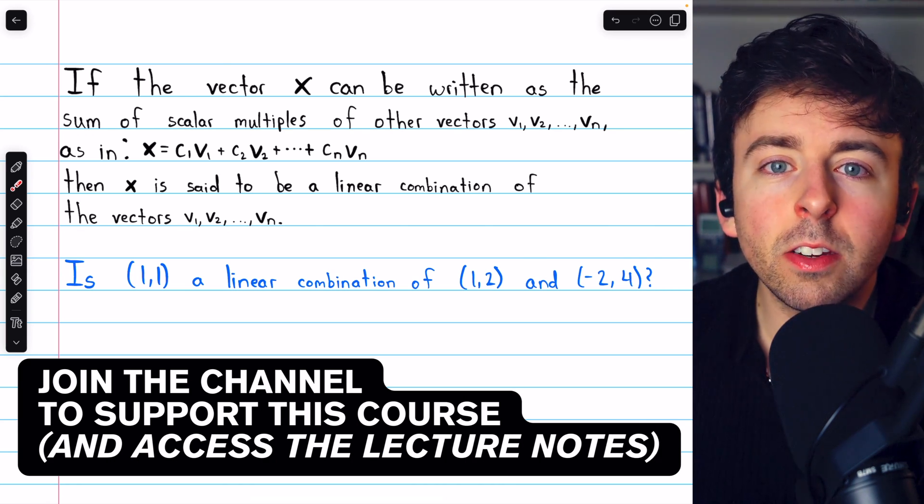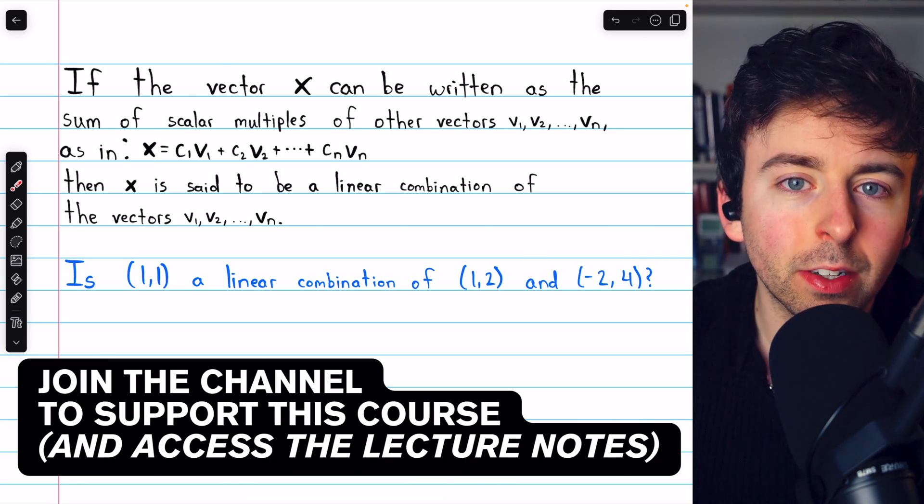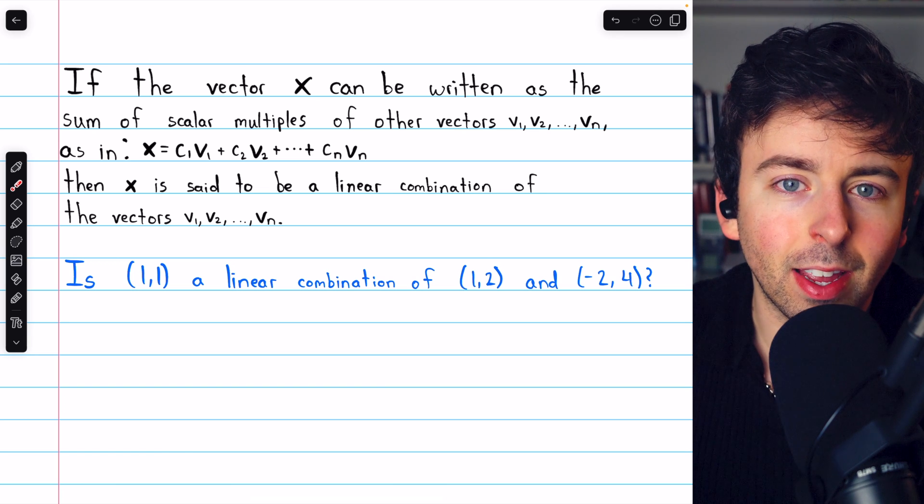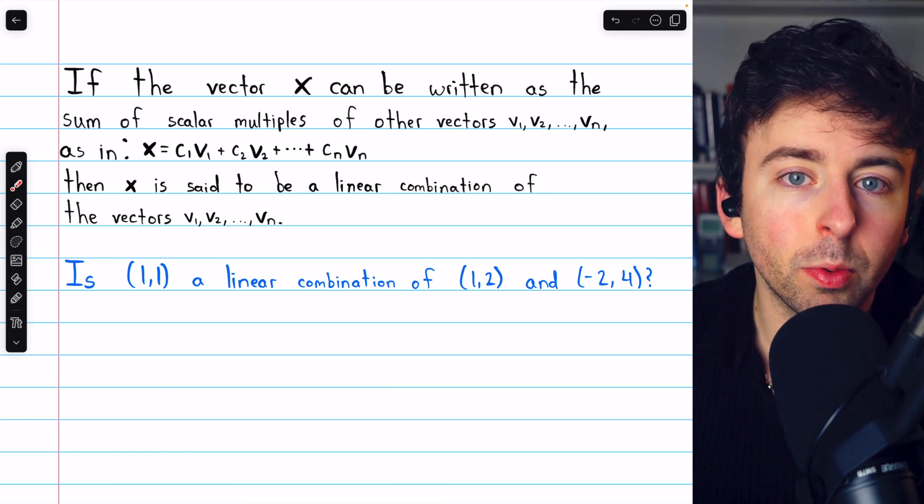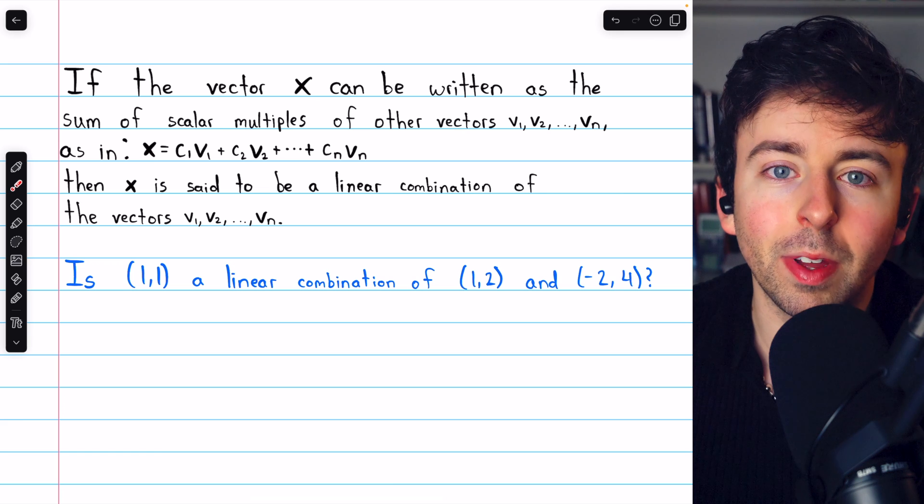How do we write one vector as a linear combination of other vectors? We'll see the general process by going over an example with a two-dimensional vector and a three-dimensional vector.